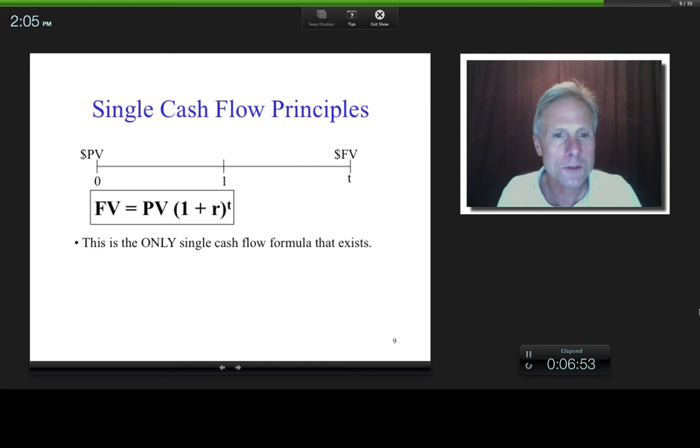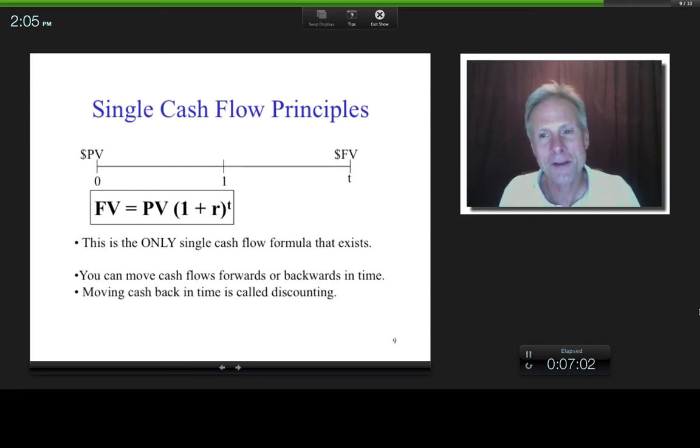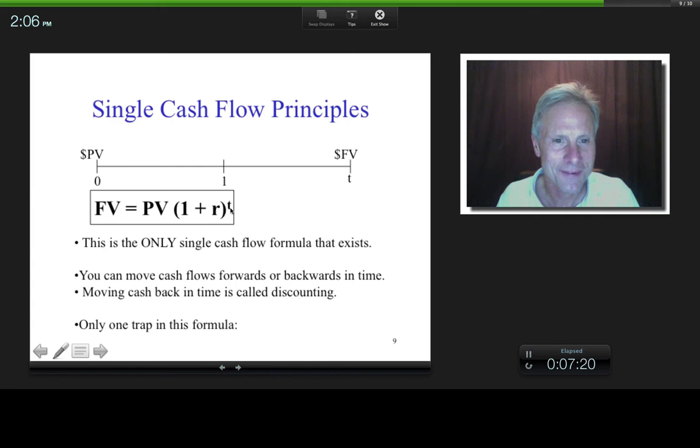And what can you do with this? Well, basically, you can move cash forward and backwards in time. If you move it back in time, it's called discounting. If you move it forward in time, it's taking the future value of. And I would suggest that there's really only one, if you want to call it, trap in this formula. Can you think of what it is? What about these two guys? If the periods represent three months, then this R better be an effective three-month rate. So in other words, the R and the T, they have to match or correspond, if you will.